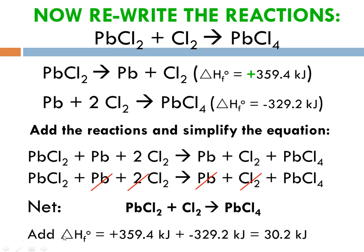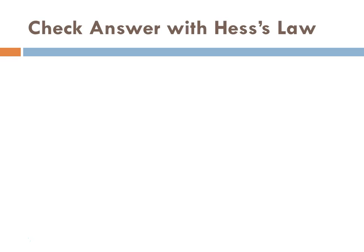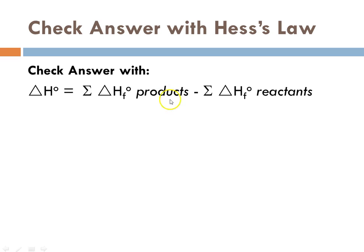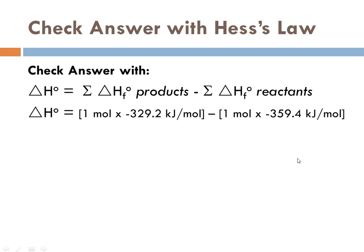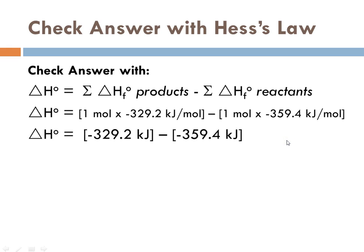The last step is to add up our delta H of formations: +359.4 kilojoules per mole plus −329.2 gives an overall heat of reaction of +30.2 kilojoules per mole. We check our answer using Hess's law — the sum of delta H of formation of the products minus the sum of delta H of formation of the reactants. Plugging in 1 mole times the value for lead(IV) chloride minus 1 mole times the value for lead(II) chloride (chlorine is excluded since its formation value is zero), we again get delta H = +30.2 kilojoules per mole, which matches.